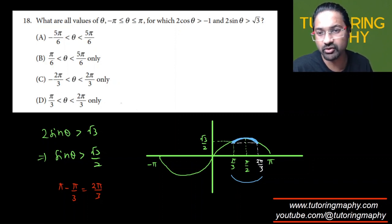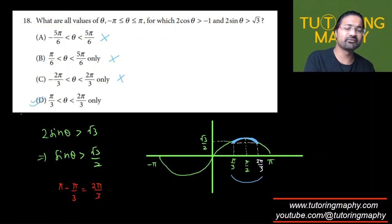So anything which is not here cannot be the answer. Obviously this is not getting satisfied. Pi over 6 onwards cannot be satisfied. Negative 2 over 3 cannot satisfy. It has to be option D even without seeing the 2 cos theta is greater than negative 1 option or solving that inequality. I know for a fact that it should be option D because that is the only one which is satisfying 2 sine theta is greater than root 3.